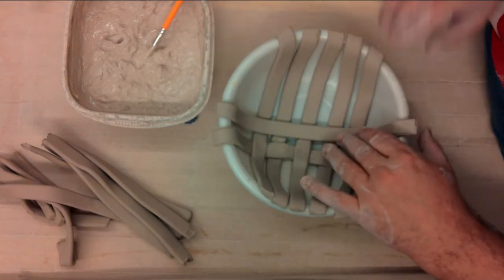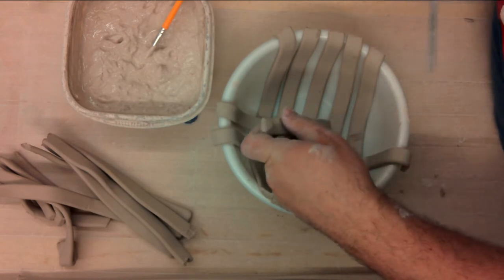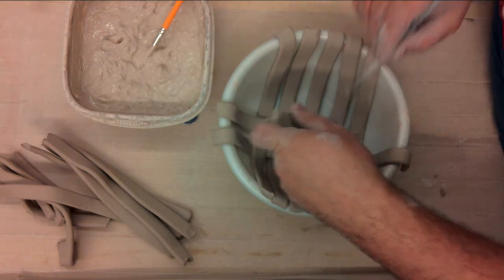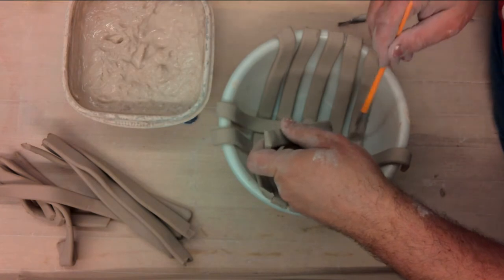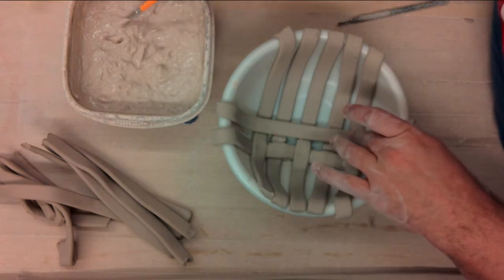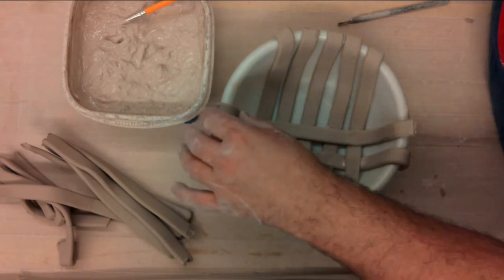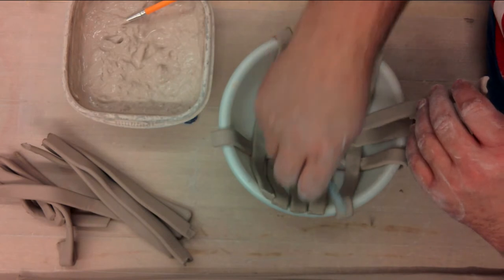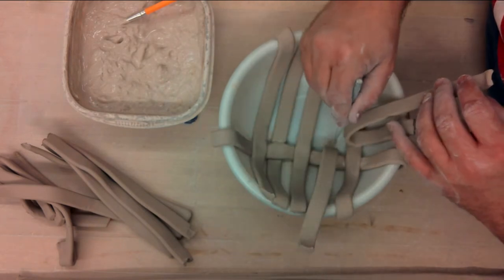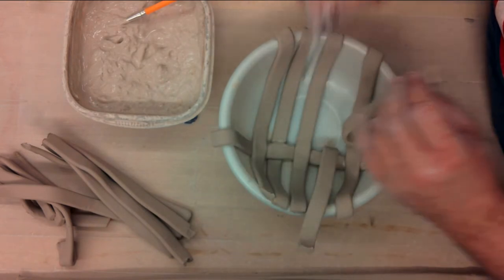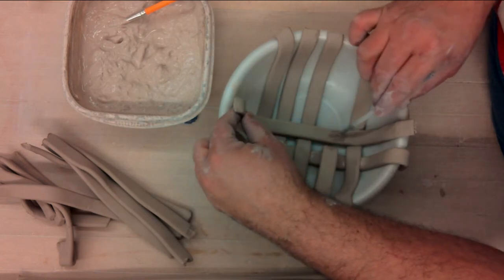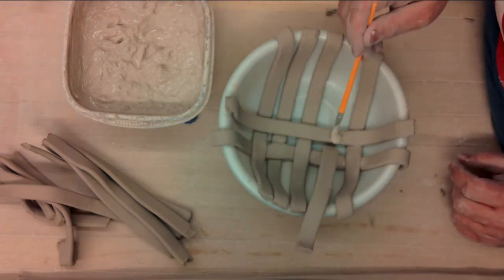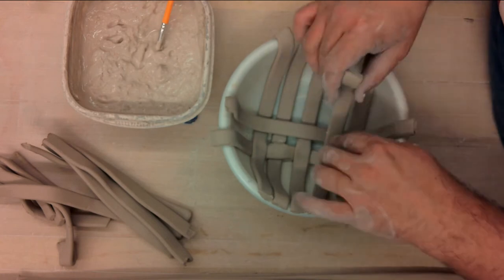Now I'm going to scratch the underside of this, score it, throw on some slip, and give it a press. Now we'll pull that back, that first coil, because I got to go over, under, over, under. So I'll score up these two coils, these two sides, throw on some slip, and give it a press.